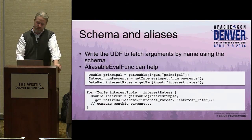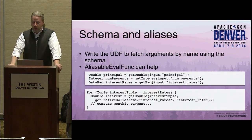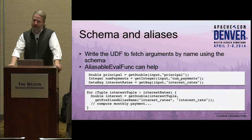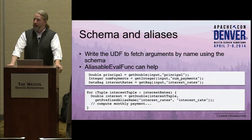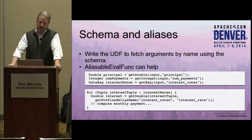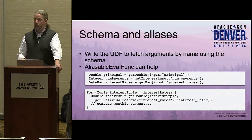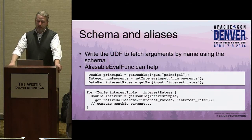There are ways to get around this. The easiest way is to write the UDF to fetch arguments by name using the schema. Now you do have a dependency on your schema names not changing, but at least if you change the name, it breaks — you're much less likely to make a sort of incompatible change that accidentally goes through without breaking. We have aliasable_eval_func in DataFu that can help with this. We have a bunch of helper methods that let you, say, get a double from a tuple by the name of the schema. This is how you could rewrite that mortgage payment UDF — instead of using positional notation, you just use the schema name, and inside of the bag you can also use the same sort of schema name. This would solve your problem.